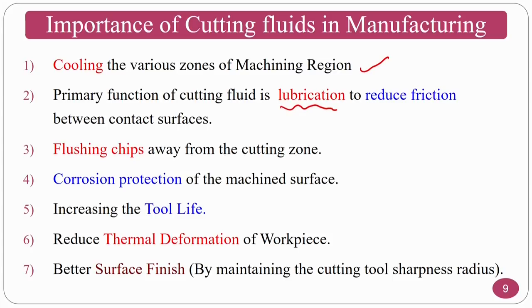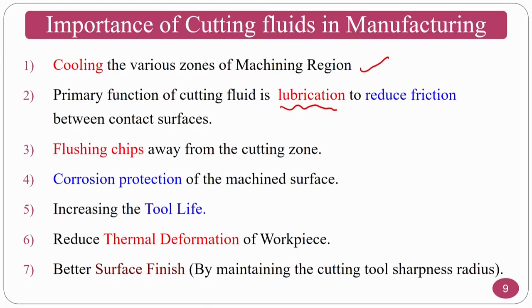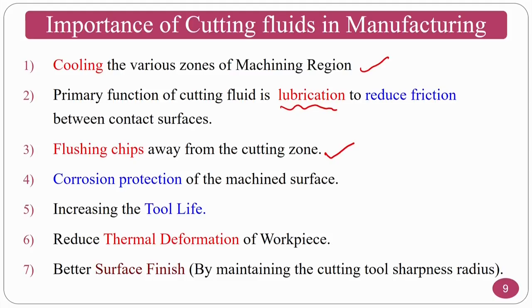Apart from cooling and lubrication, another function is flushing away chips — this applies to drilling and reaming processes. When you do a drilling operation, chips accumulate along with the drill bit and must be flushed out; cutting fluid helps in flushing away chips. Cutting fluid contains additives like corrosion inhibitors or corrosion preventers, which help protect the workpiece from corroding after becoming the final product. At the same time, cutting fluid reduces the temperature in the machining zone so that tool life goes up by maintaining its hardness.